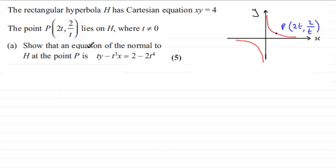So, we're asked to find the equation of the normal to this curve H. And that normal is going to look something like this. It's going to be a line that's perpendicular to our tangent at that point.